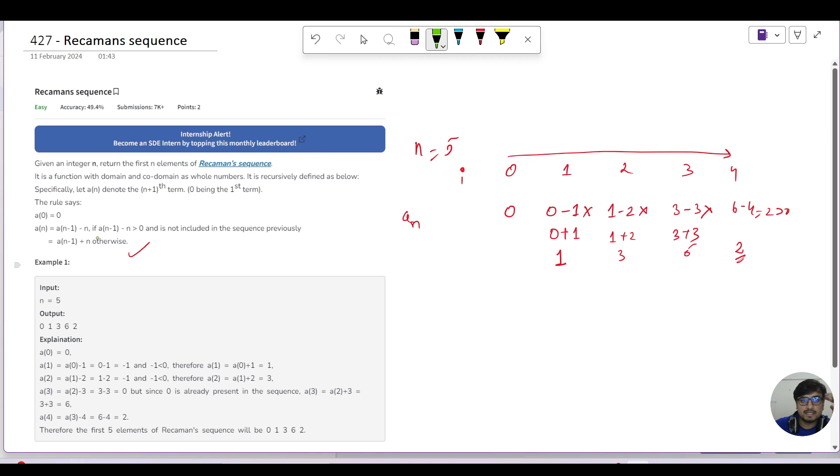So two conditions are here: one, you have to check that it's greater than zero. But this is not included in the sequence previously. So let's say if I am at jth position in the sequence, I have a number x.